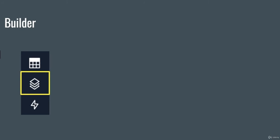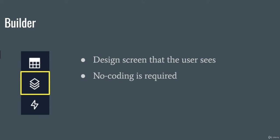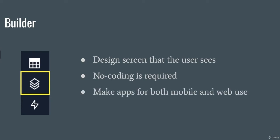The second component is builder. Builder allows you to design screens that the user will see. It's a no-code interface that allows you to make an app without any coding. You can make apps for both mobile and web use at the same exact time, so you don't have to make a separate app for each — you can make both at the same time, saving you a lot of time.